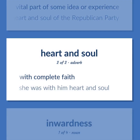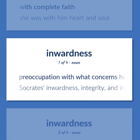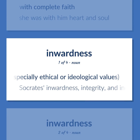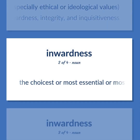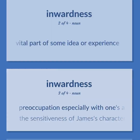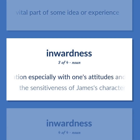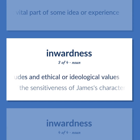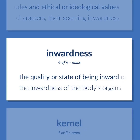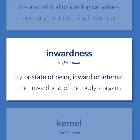Heart and soul: The choicest or most essential or most vital part — the heart and soul of the Republican Party. With complete faith — she was with him heart and soul. Inwardness: preoccupation with what concerns human inner nature, especially ethical or ideological values. Preoccupation especially with one's attitudes and ethical or ideological values — the sensitiveness of James' characters, their seeming inwardness. The quality or state of being inward or internal — the inwardness of the body's organs.